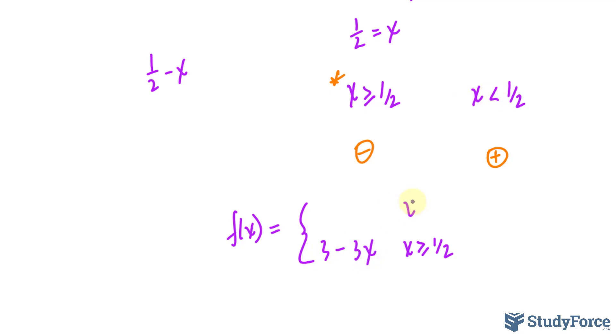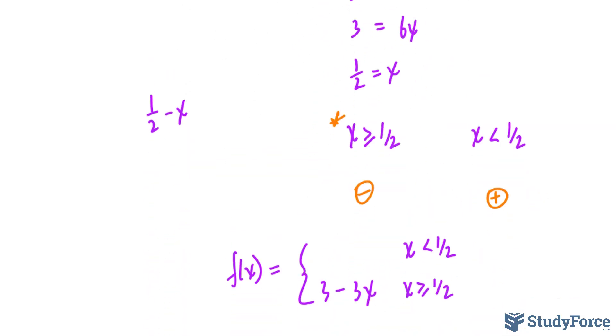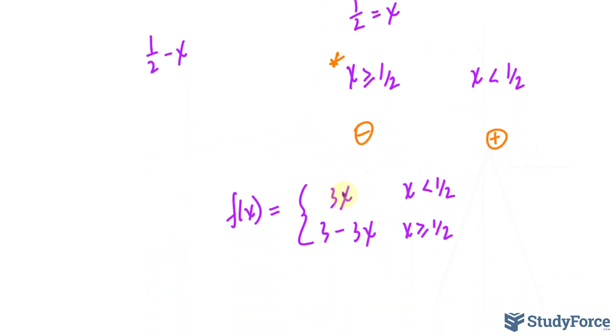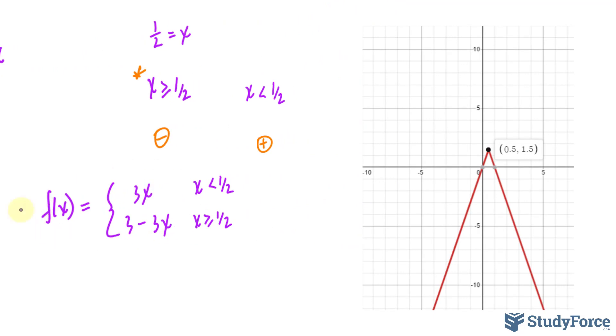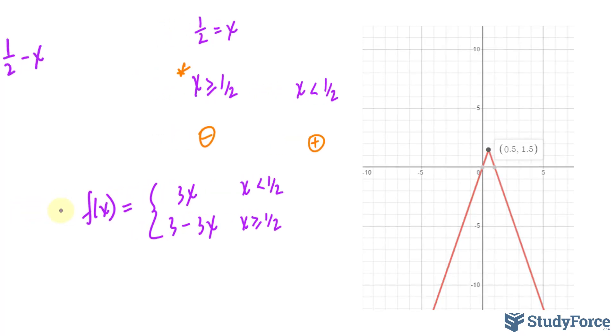And for our positives, when x is less than half, we had this expression, 3x. What you see here in purple is what the original function looks like as a piecewise function.